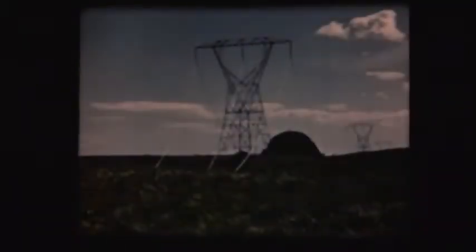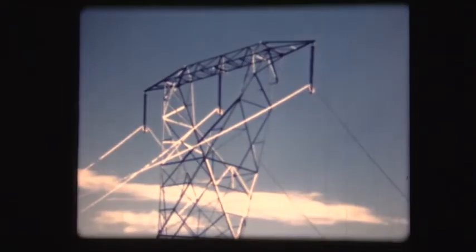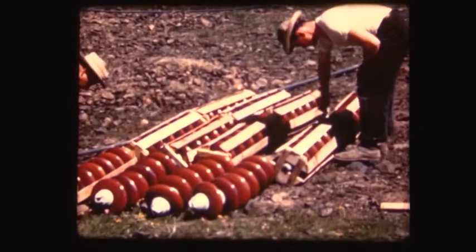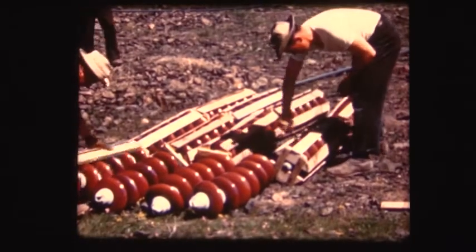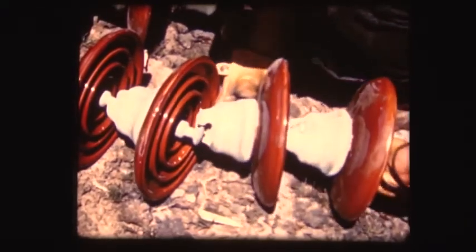When the stringing operation has been completed, we have a section of line with the conductor hanging loosely in the shivs. The next operation is sagging. That is, pulling the conductor up to the sag specified in the stringing manual. Before the line is sagged, it must be made fast at one end. In most situations, this can be done by securing it permanently to a dead-end tower.